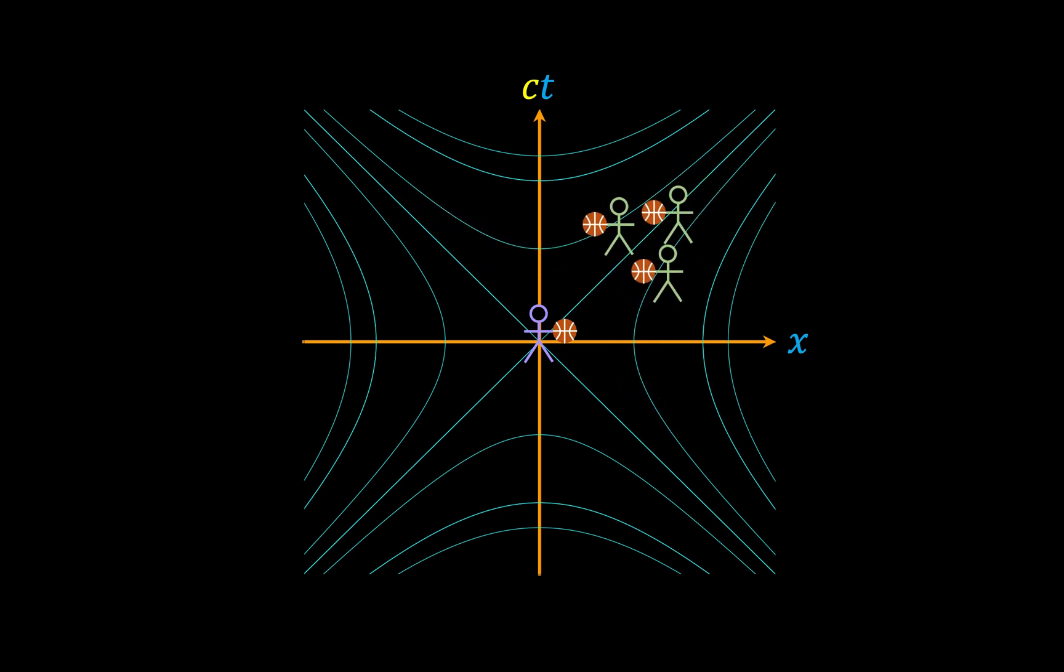If event b were in the time-like region, then it could not transition from the future of event a to the past of event a, denoted by the sign of t. If it were in the space-like region, then it could do just that, but this would have no implications for causality, since event a and event b could not influence each other anyway.